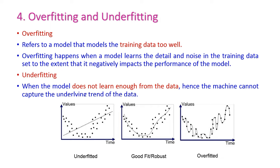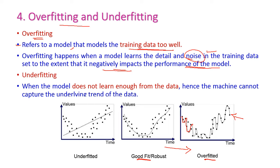The next issue is overfitting and underfitting. Overfitting refers to a model that models the training data too well. Compared to a good fit, the overfit model trains too well, considering all the noise in the training data also, which negatively impacts the performance of the model. The opposite of overfitting is underfitting, which means the model does not learn enough from the given training data. Compared to a good fit, the machine does not learn sufficiently from the training data.